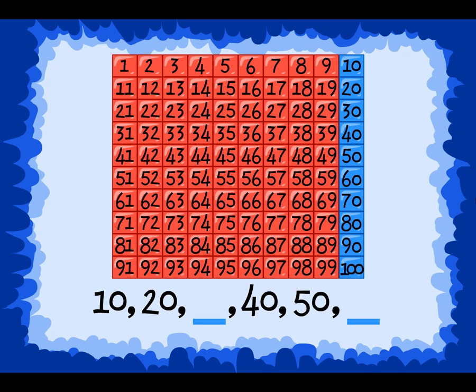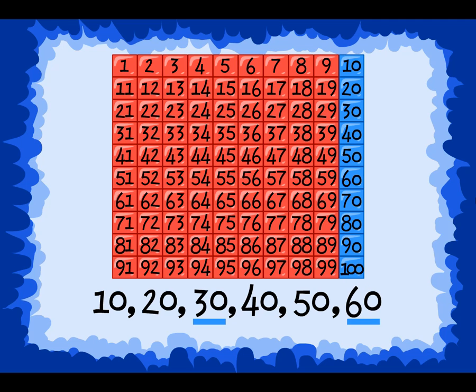Here is a list of numbers. Two of these numbers are missing, and we are going to try to figure out which ones. I'm going to start counting, and you can count along with me. 10, 20 — we've hit a blank. What number do you think goes in this blank? That's right, 30. Let's continue counting: 40, 50 — here is another blank. What number do you think goes in this blank? That's right, 60. Now let's count the whole list together: 10, 20, 30, 40, 50, and 60. That's right.